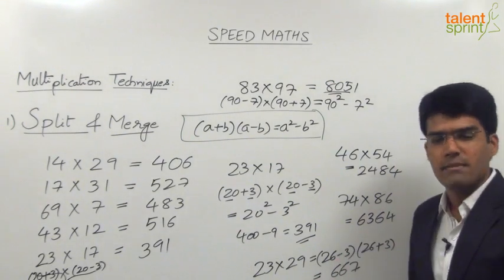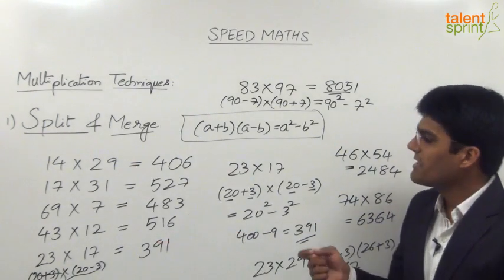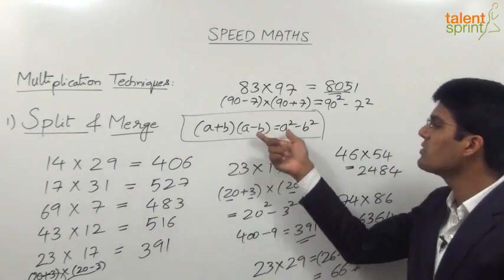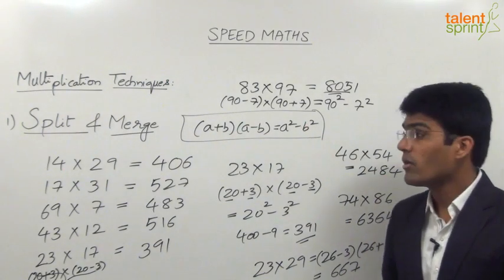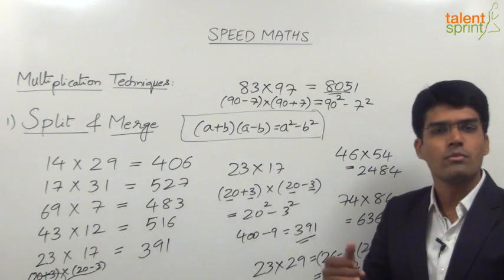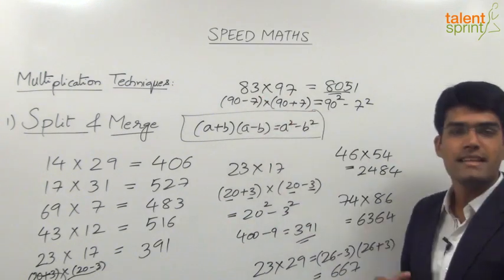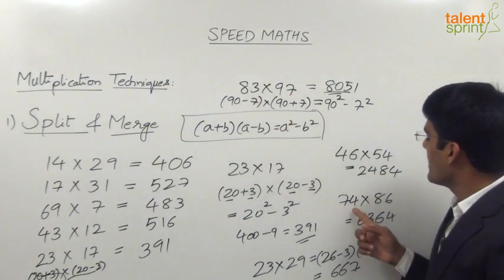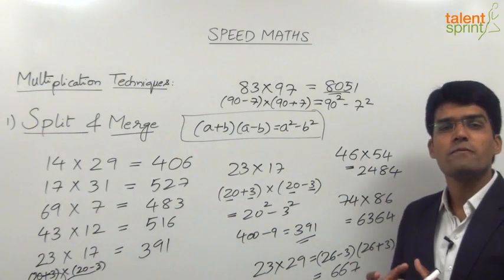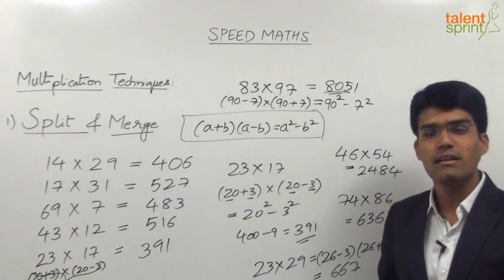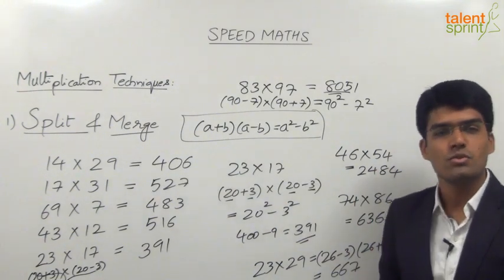As you can see from these various examples, when the question is simple like 23 into 17, whether we go for split and merge or use (a + b)(a - b) = a² - b² doesn't matter, as both methods take almost the same time. But as the numbers grow larger — for example 83 and 97, 74 into 86, or 46 into 54 — split and merge may become difficult. Applying the formula gives the answer in just 2 to 3 seconds.